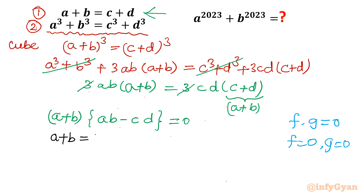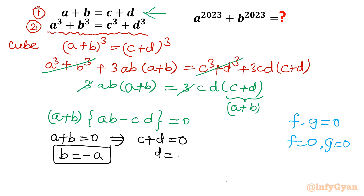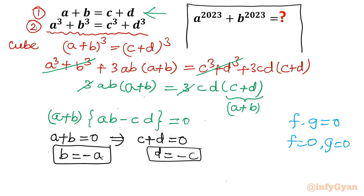Case 1: a plus b equals 0. From equation 1 this also means c plus d equals 0, so b equals minus a and d equals minus c. Substituting into our expression: a to the power 2023 plus (minus a) to the power 2023. Since 2023 is odd, this equals a to the 2023 minus a to the 2023, which equals 0.